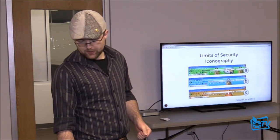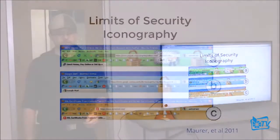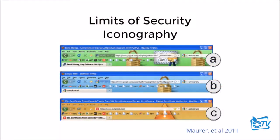We can also take this to the logical — or illogical — extremes, in which we take the entire browser chrome and dedicate it towards just displaying security information. At the very top is an extended validation cert, in the middle a regular SSL cert, and at the bottom, unencrypted. Users were asked to visit websites with those different levels of validation and rate how trustworthy the site was.